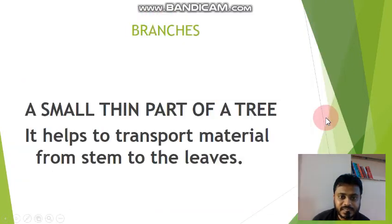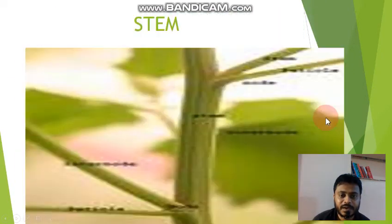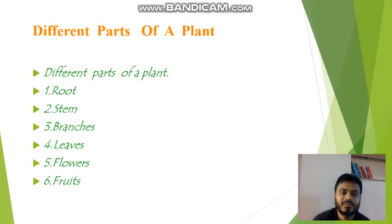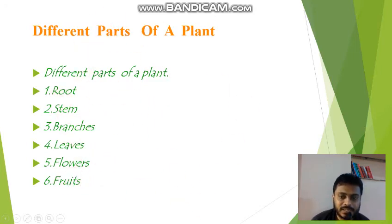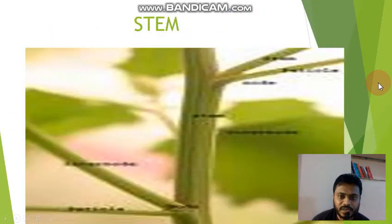We have seen the six parts of the plants and their functions: root, stem, branches, leaves, flowers, and fruit. These are the six parts of the plants. We have learned about them and their functions.